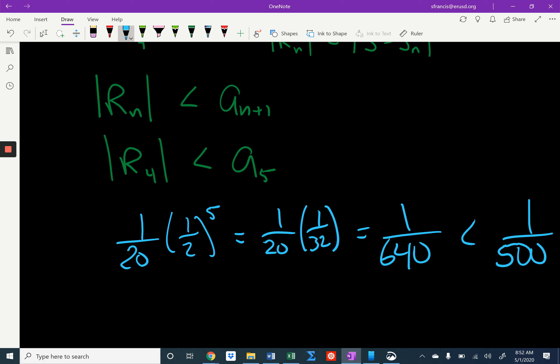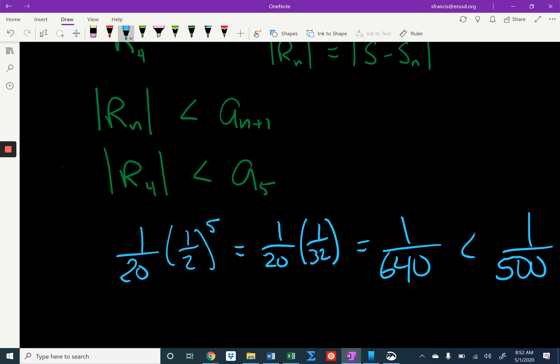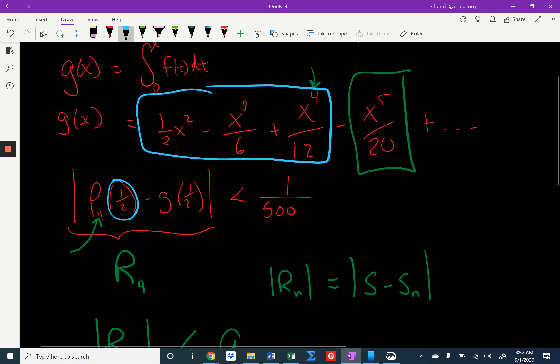And that's what they wanted us to show. So that's the whole problem right there. That's what you're trying to do. You're trying to just show that the error in the fourth degree polynomial, when evaluated at 1 half, is going to be smaller than 1 over 500. There it is.